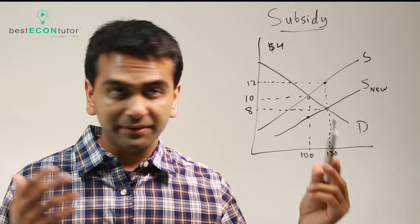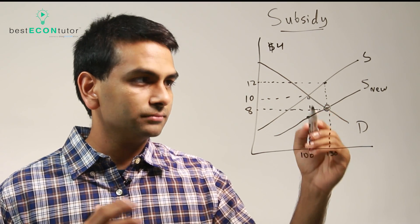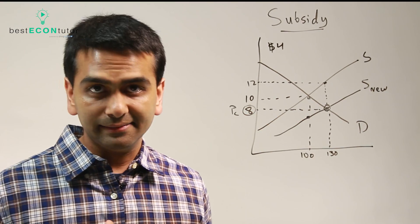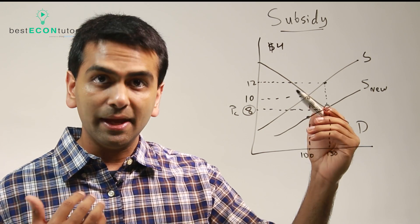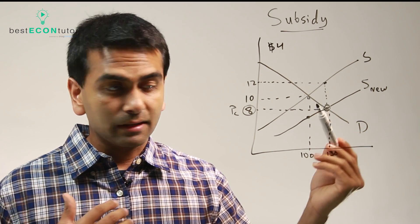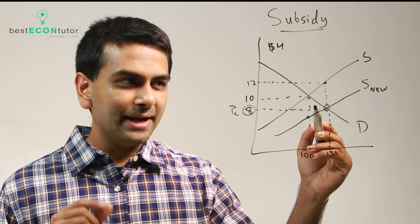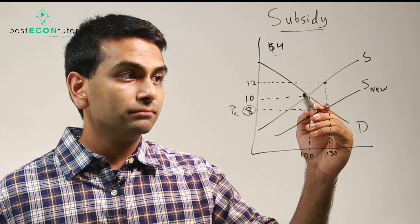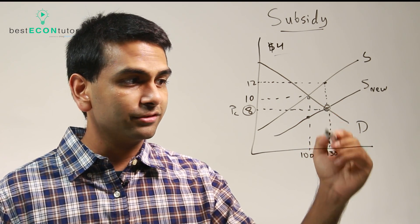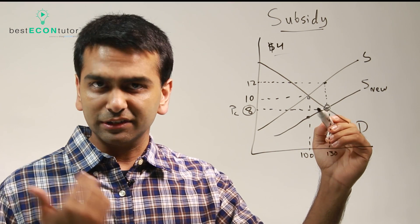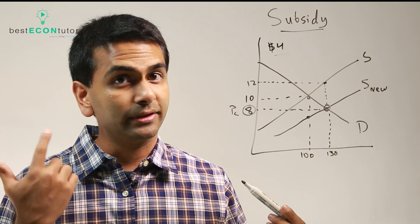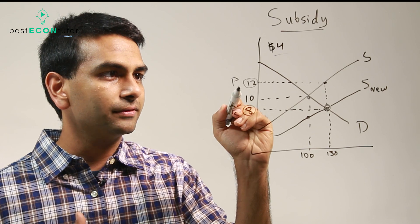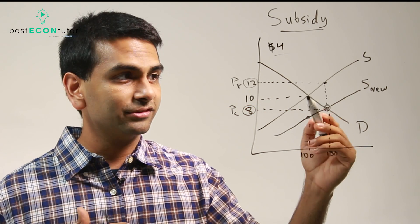The intersection now between supply and demand is over here, so the new price is $8 that the customer pays. Notice that's less than what they used to pay — instead of 10, they're now only paying 8, so they're better off. But their price didn't go down by the full $4 subsidy, so just like with the tax, it's kind of split. The consumers are better off because they're only paying $8 and buying 130 items. But the producers are getting only $8 from their customers, plus $4 from the government, so $8 plus $4 is $12. That's the producer's price — $12 instead of $10.